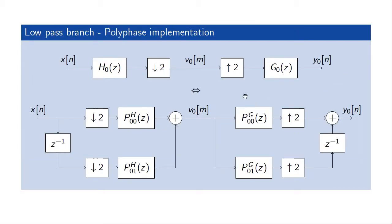For the low-pass branch, with the low-pass filter followed by the downsampler, we can split that using a polyphase implementation into a two-branch system since we have downsampling by a factor of two. That involves interchanging the order of the downsampling and the filter. The two polyphase filters are obtained from the impulse response of the original filter by reading off the even components and the odd components of that impulse response. Similarly for the upsampling, we interchange the order of the upsampler and the interpolation filter to obtain two polyphase filters based on G.